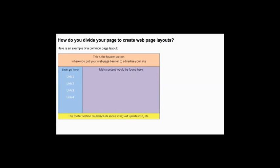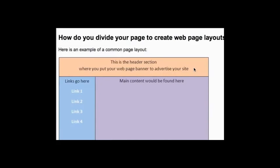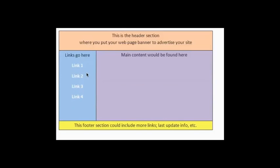This page you are looking at contains a picture of a web page that uses color to indicate sections of the page. At the top is the header area which introduces the page. It might contain the title of the site in text or an image banner. It may also contain links to other pages within your site. On the left is an area where you might put your links. This may be referred to as your table of contents and the links would take a viewer to your supporting pages.